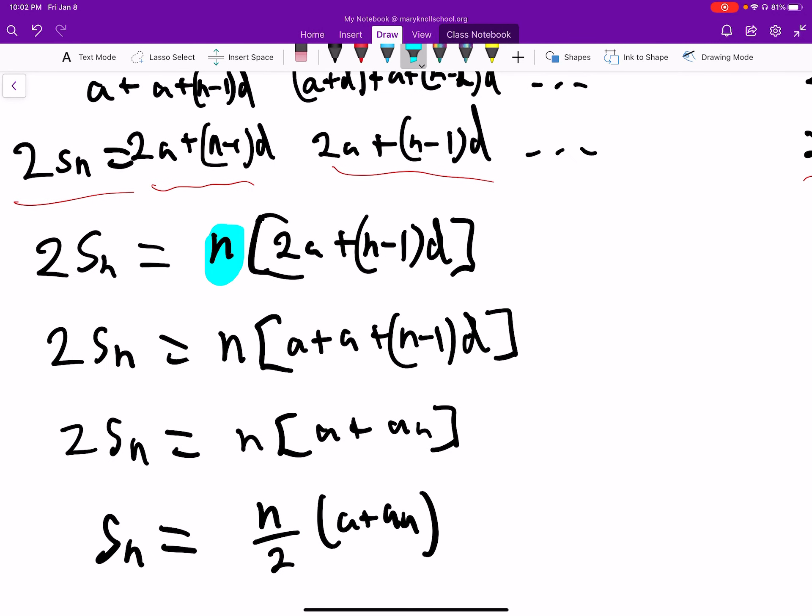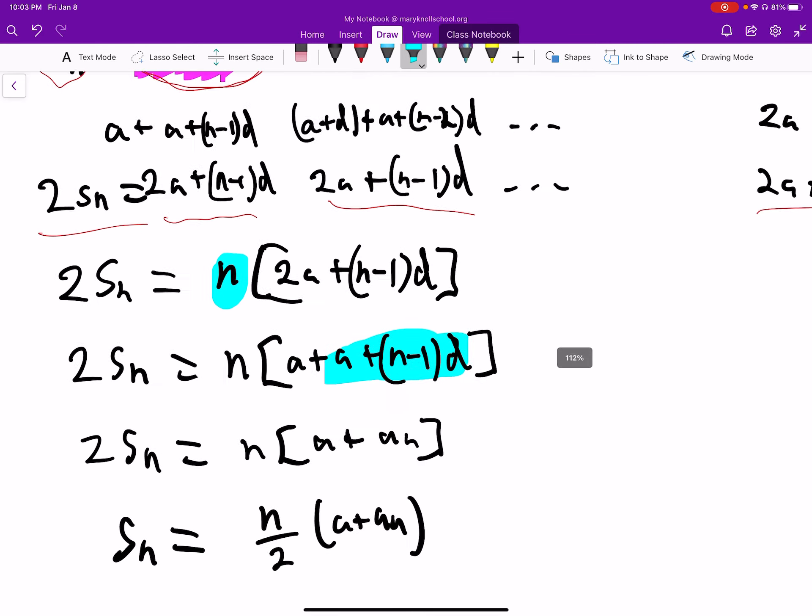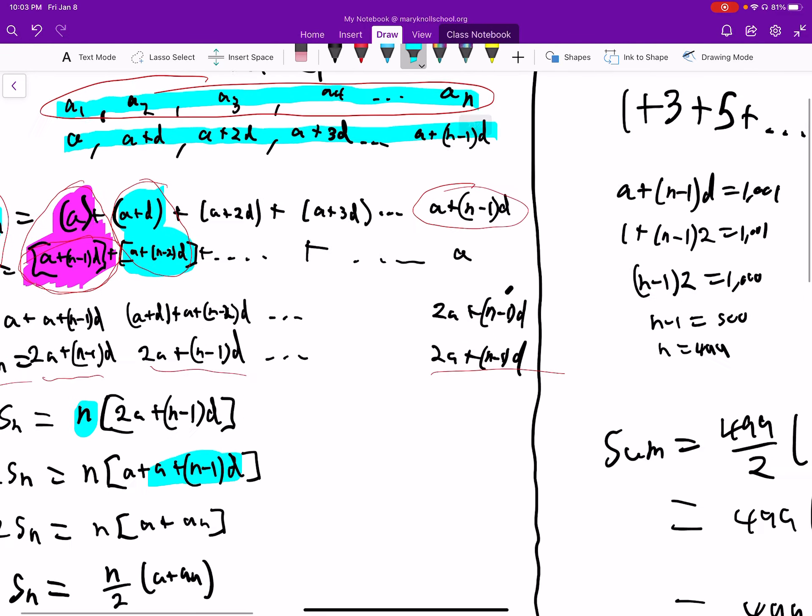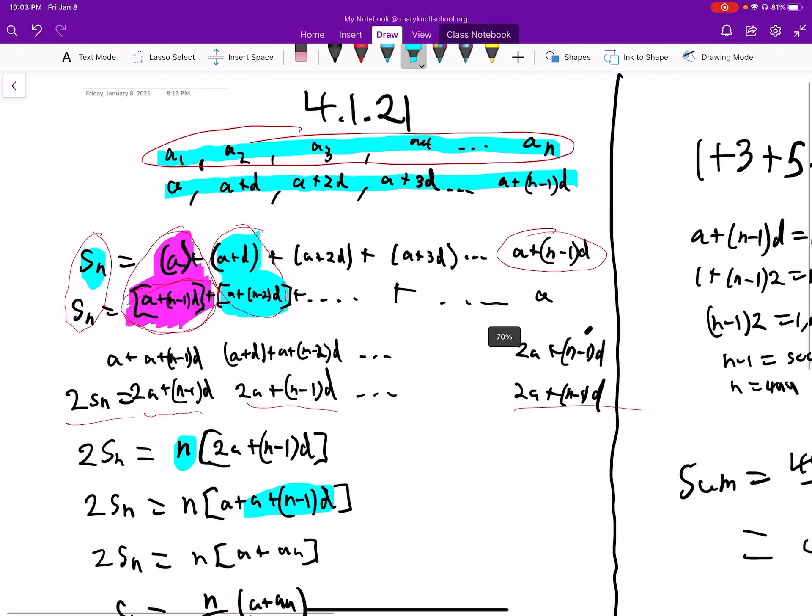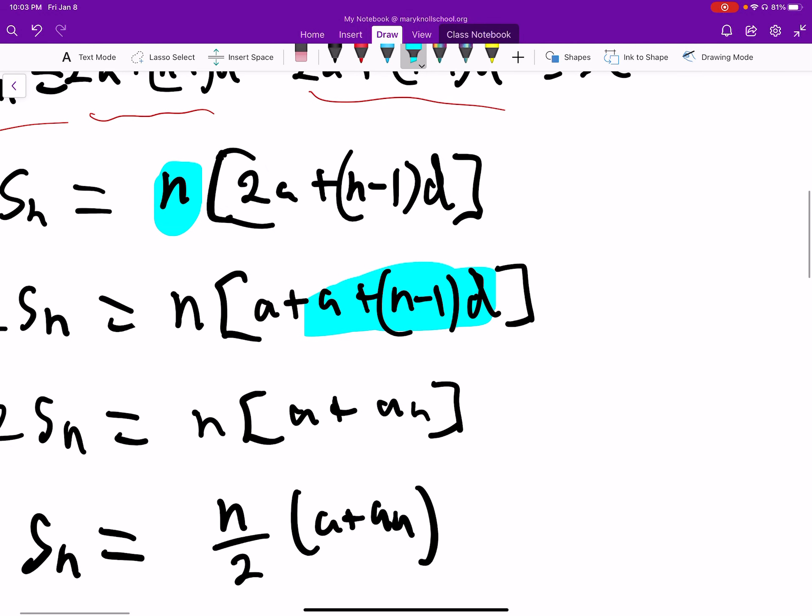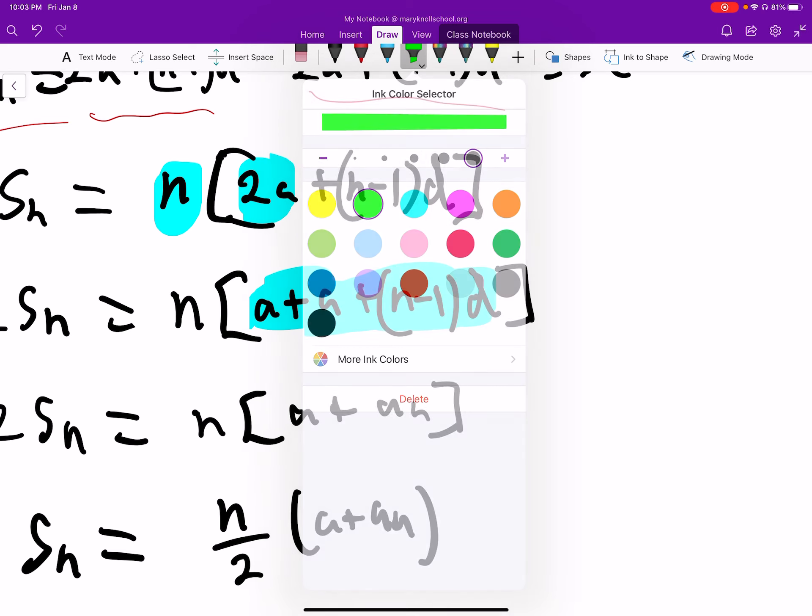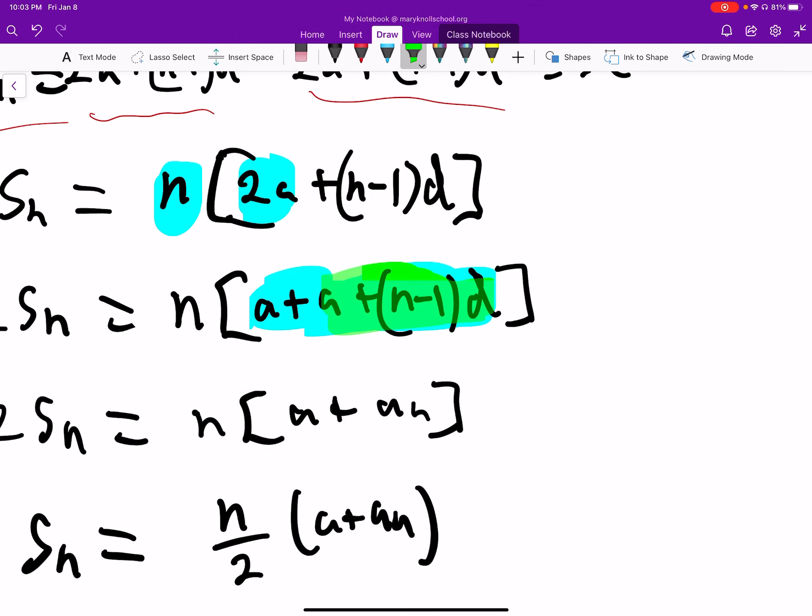And then here's just the simplification part. So what I wanted to do is take out AN, the last term of the sequence, which is right here: A plus (N-1)D. And so I went ahead and did that by splitting apart this 2A into A. So here again, we get AN right here.